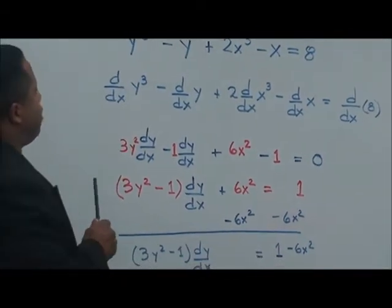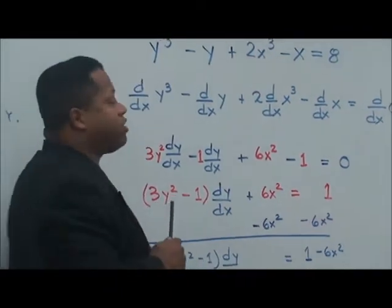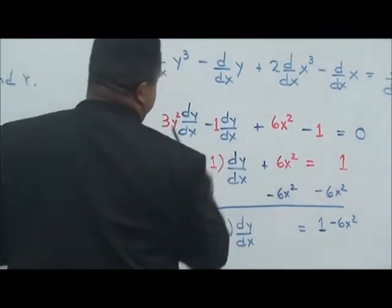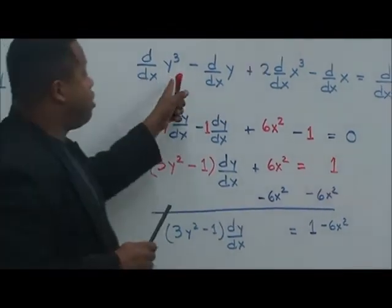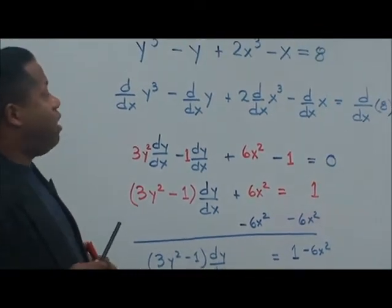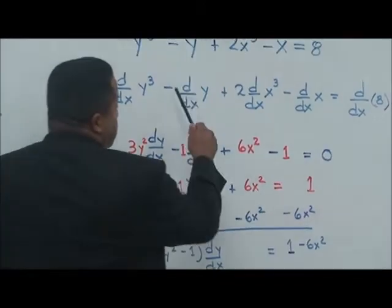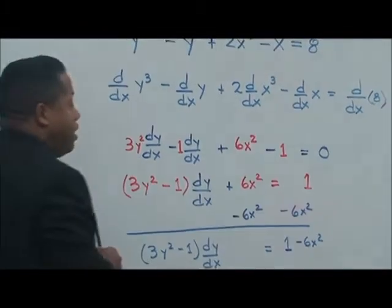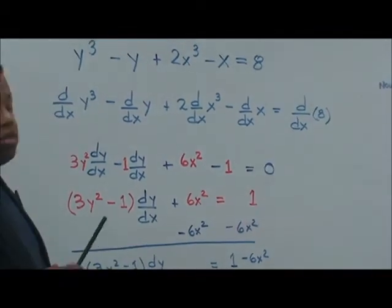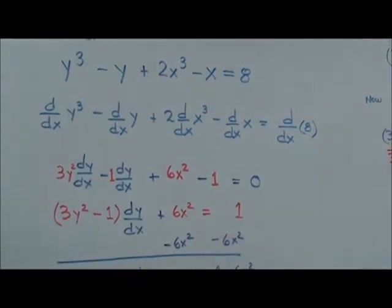Now, when we take the derivative, remember this term involves y. When you take the derivative, it's going to be 3y squared with dy/dx assigned, because this term is involving y. Minus — when you take the derivative of y, it's going to be negative 1, and since that's involving the term y, it's also going to be minus 1 dy/dx. Plus, this doesn't involve the term y, so it's just going to be 6x squared minus 1 is equal to 0, with the derivative of a constant being 0.